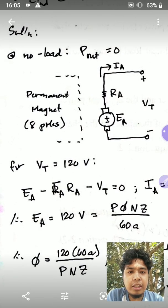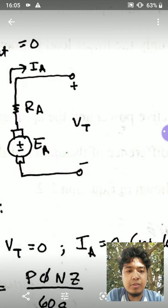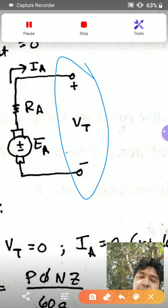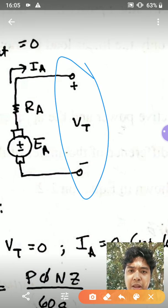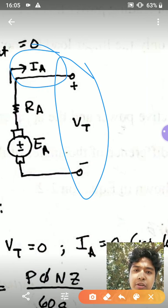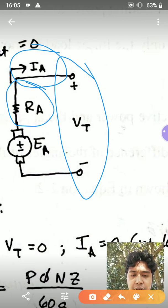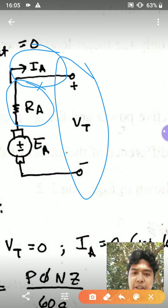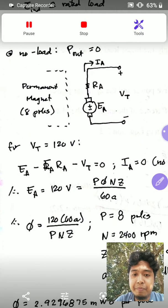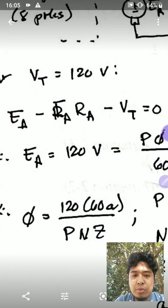If the terminal voltage is 120 volts at no load, and if this is not loaded, meaning the power at the output is zero, therefore Ia is equal to zero. Because Ia equals zero, the voltage drop across the armature resistance is equal to zero. So that makes Ea equal to Vt by KVL, which makes your Ea equal to 120 volts.